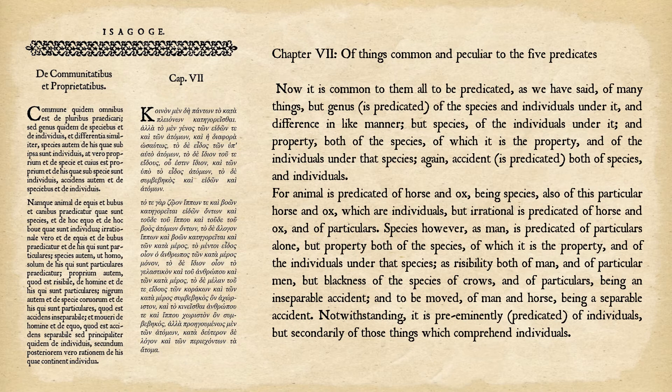Property belongs both of the species and of the individuals. It is the property of the species of man to be able to laugh, and it's also the property of this particular man over here to be able to laugh. Blackness belongs to the species of crows and of particulars, being an inseparable accident. These accidents are applied in the same way. It is preeminently predicated of individuals, meaning it's most properly assigned to an individual when making some type of logical proposition.